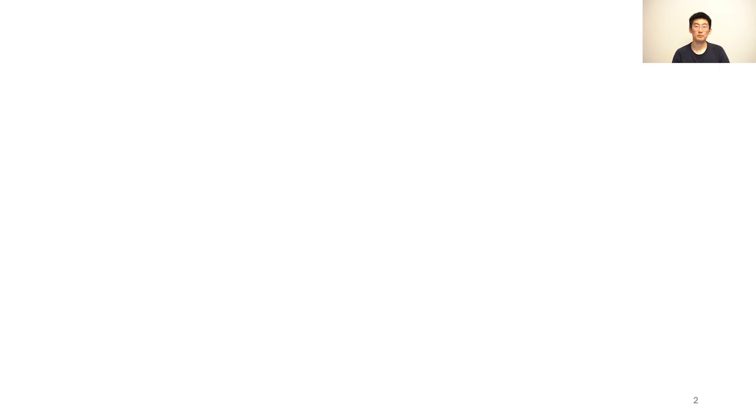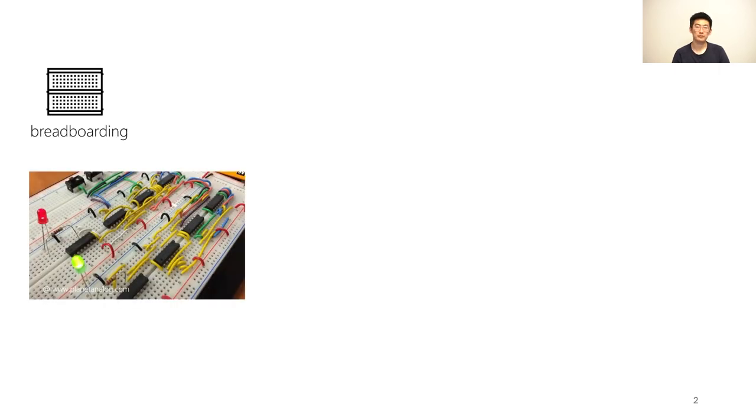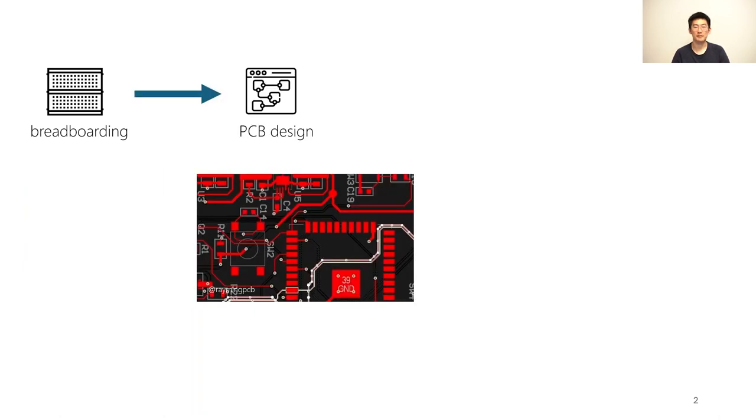Conventionally, circuit prototyping usually starts with breadboarding. We quickly swap out circuit components to test functionalities, and at a certain stage, the prototype will move towards a better packaged version, especially when approximating the final prototyping form. We will want to design a PCB in an EDA software and then make PCB assemblies.